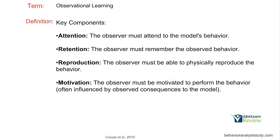For observational learning, it's a bit deeper. We have an observer and a model. The observer must attend to the model's behavior. The observer must remember the observed behavior — behaviorally, this means it must be a skill they can reproduce as time passes. The observer must be able to physically reproduce the behavior. And the observer must be motivated to perform the behavior because they've observed the contingencies — what has or hasn't been gained from engaging in that behavior.